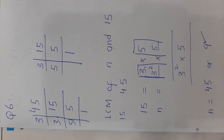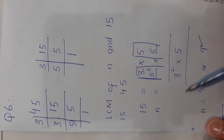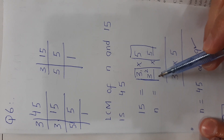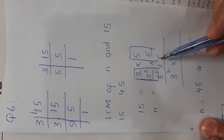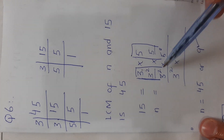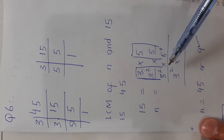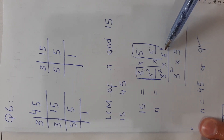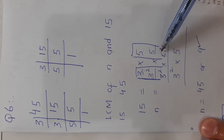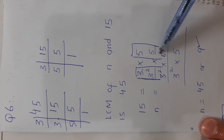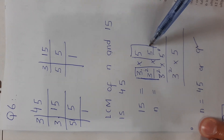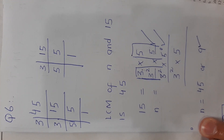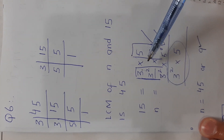A second possibility is n = 3² and 5⁰, meaning n = 9. If n = 9, write 5⁰ in n's column. This is another valid possibility for n, giving two cases — n = 45 or n = 9 — and both yield the same LCM of 45.